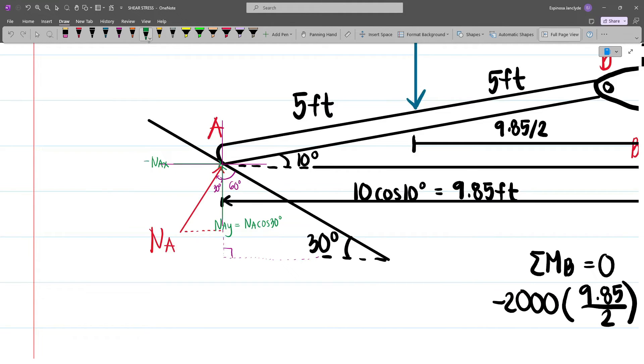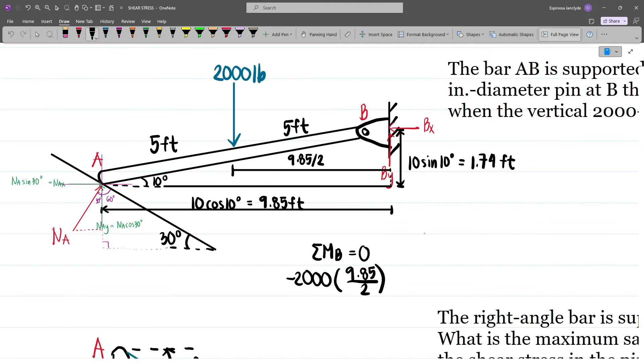And so our NaX will be Na sin 30. And so here we have plus NaY or simply Na cos 30 times the moment arm which is 9.85 feet.